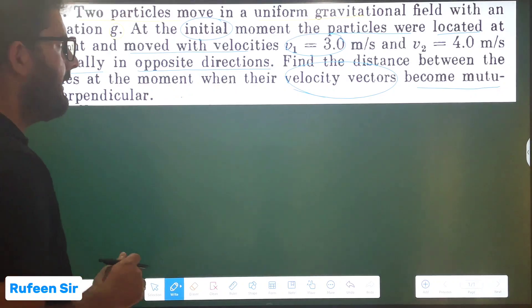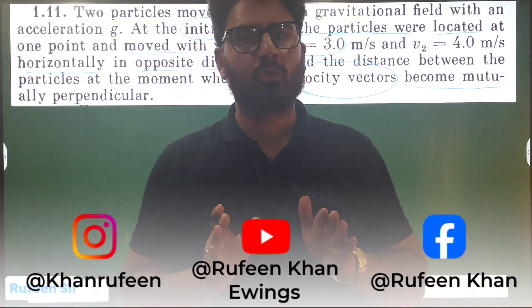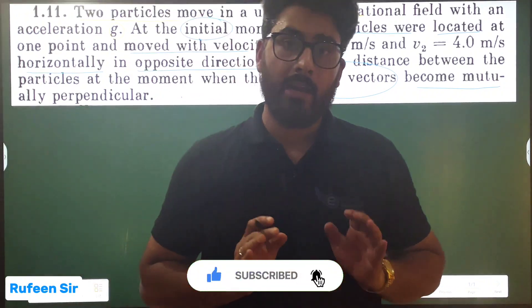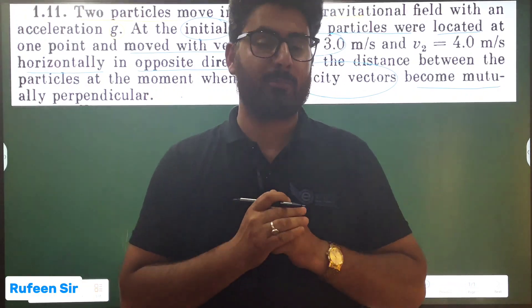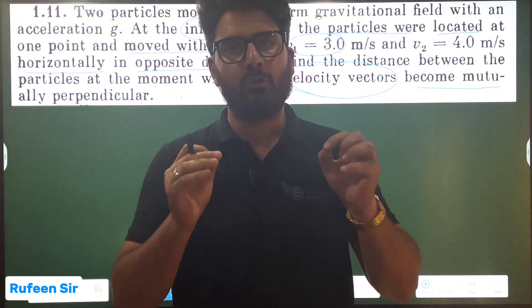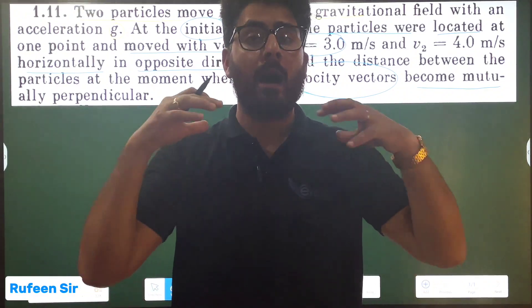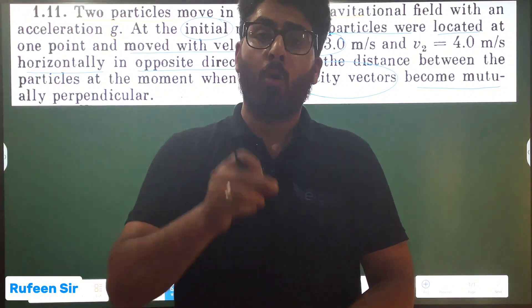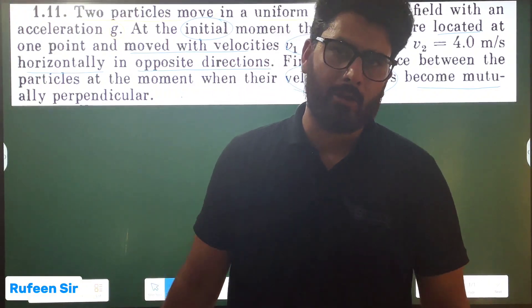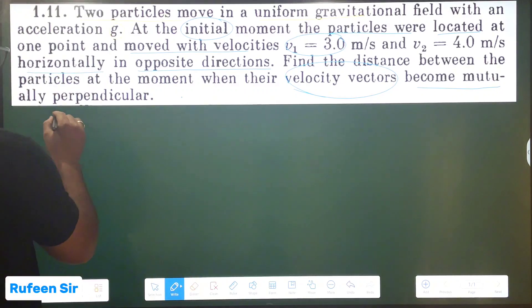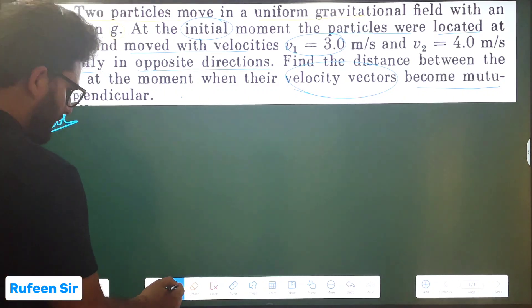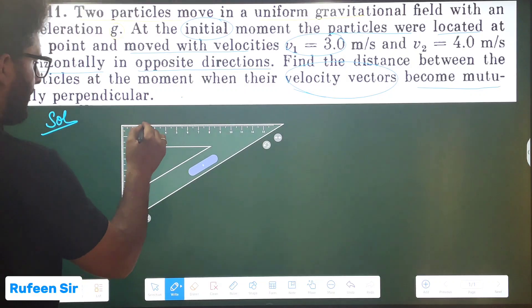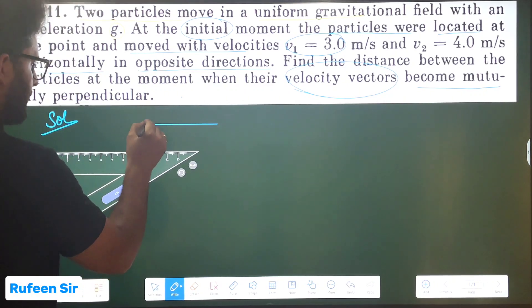In this question there are two particles — both particles are projected in a uniform gravitational field where acceleration due to gravity is constant. This is a case of uniformly accelerated motion. The two velocities are given in opposite directions; we need to find the separation between the two particles at the time when their velocities are perpendicular. First, we will make a diagram.